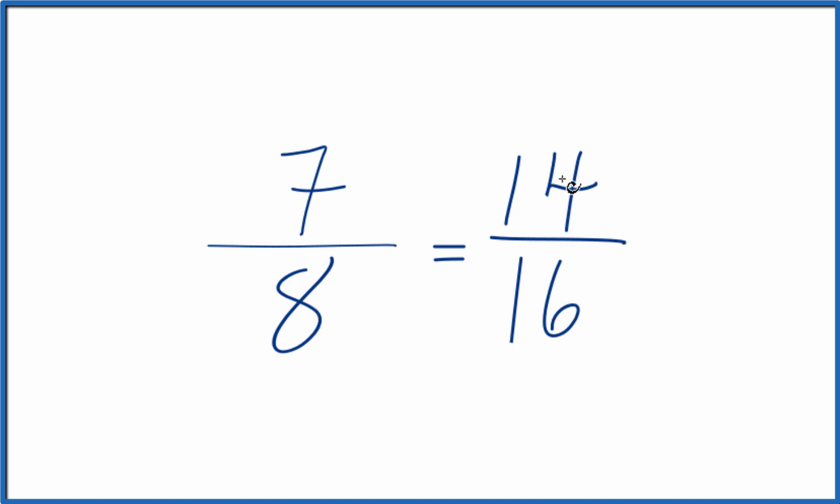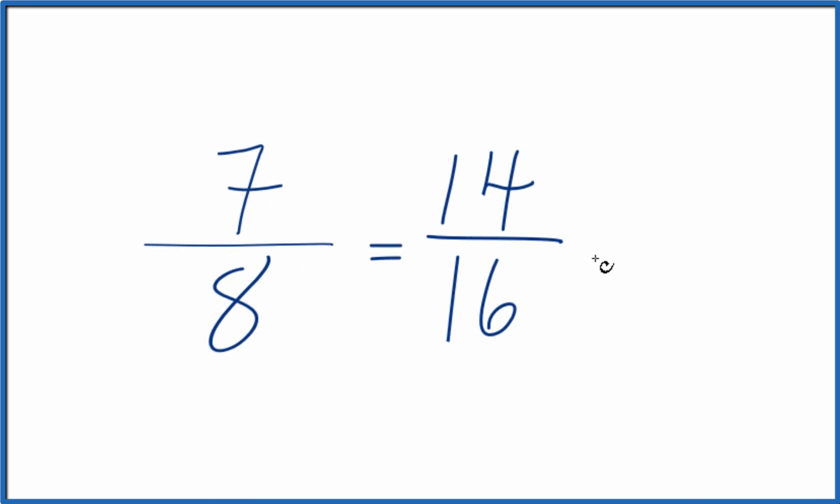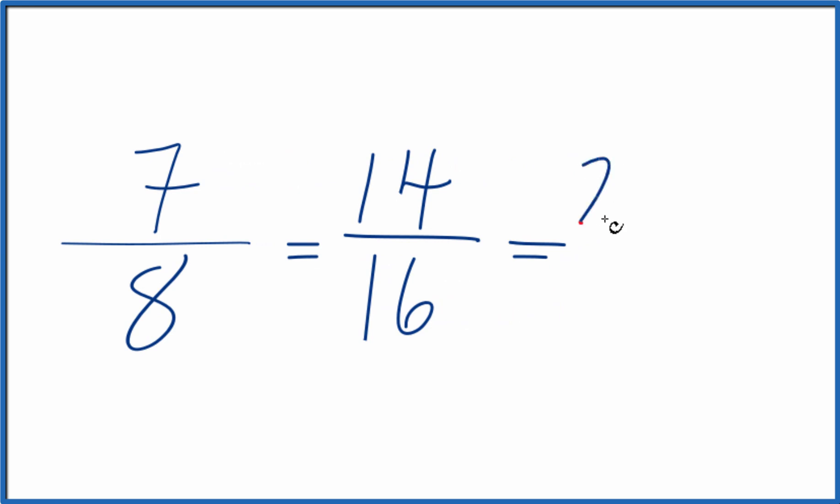If you divide 7 by 8 or 14 by 16, you get the same value. Let's multiply the numerator and denominator by 3. 7 times 3 is 21. 8 times 3 is 24.